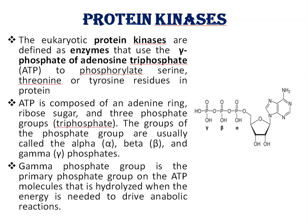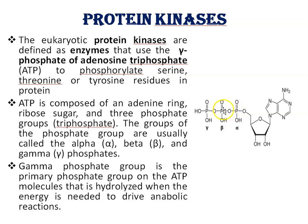Now, where is the gamma phosphate of ATP present? ATP is composed of an adenine ring, a ribose sugar, and three phosphate groups. These phosphate groups are called the alpha phosphate group, beta phosphate group, and gamma phosphate group.